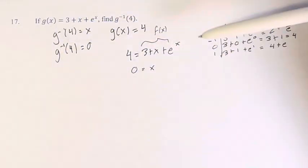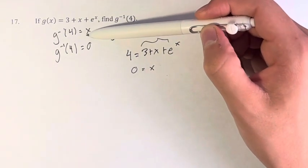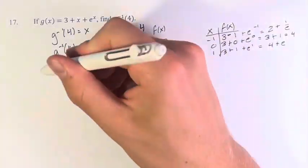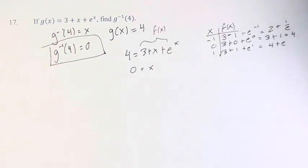So, for both of these functions, g and g inverse, for any given y value, there can only be one x value. So, we know the only solution is 0.